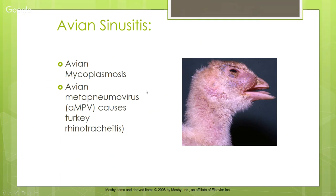In birds, avian mycoplasmosis can infect the sinuses — it's a Mycoplasma bacteria that's very difficult to treat. They can also get avian metapneumovirus, a viral infection in turkey poults causing turkey rhinotracheitis. If beaks are trimmed too far back and there are bacteria in the environment, birds can get a nasal infection leading to sinus infection — as shown in this maxillary sinus infection in a turkey poult.